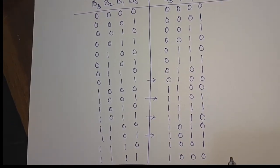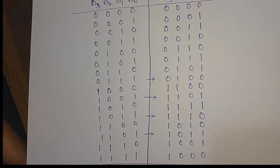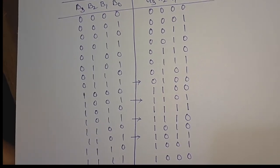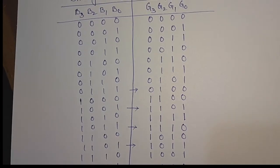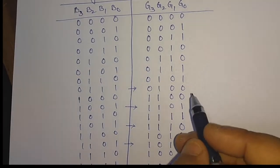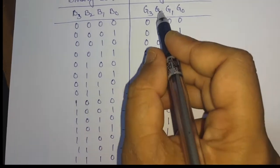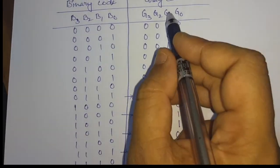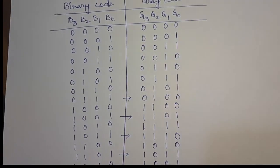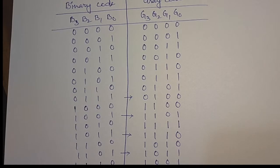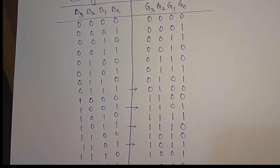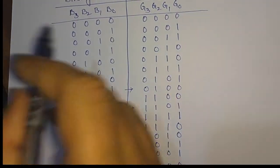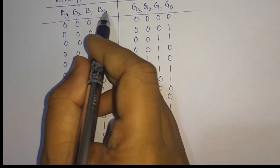This is the gray code conversion of the 4-bit binary numbers. From this truth table, we will try to find out the expression for Z3, Z2, Z1, and Z0. For this, we have to make the K-map and from that find out the Boolean function for Z3, Z2, Z1, and Z0 in terms of B3, B2, B1, and B0.